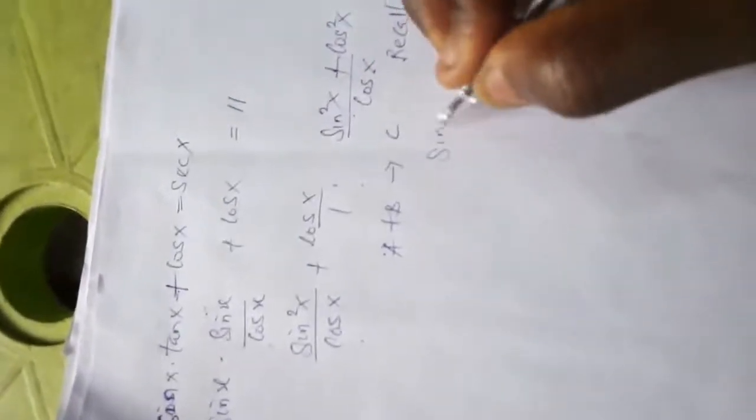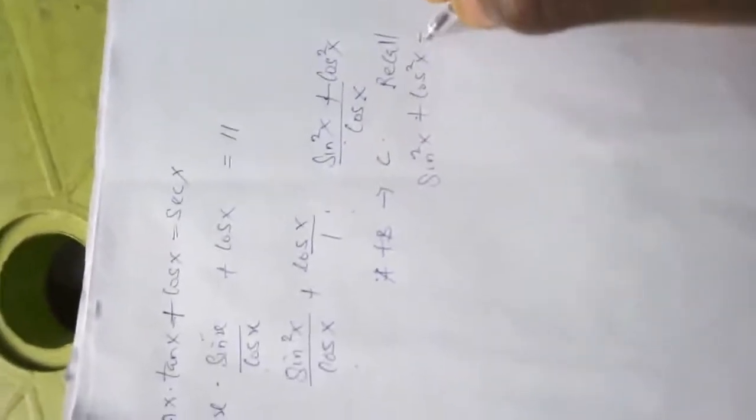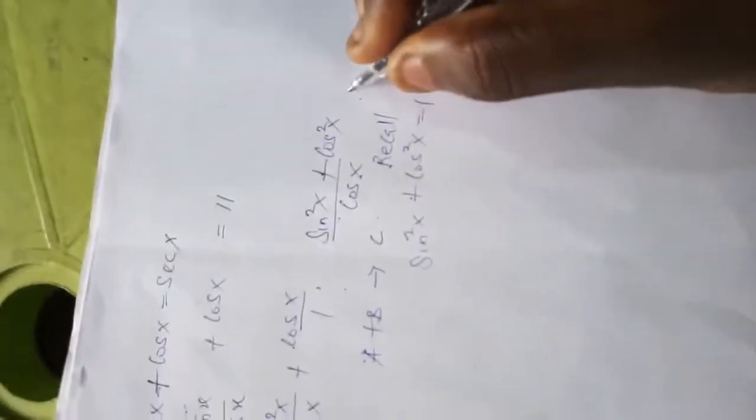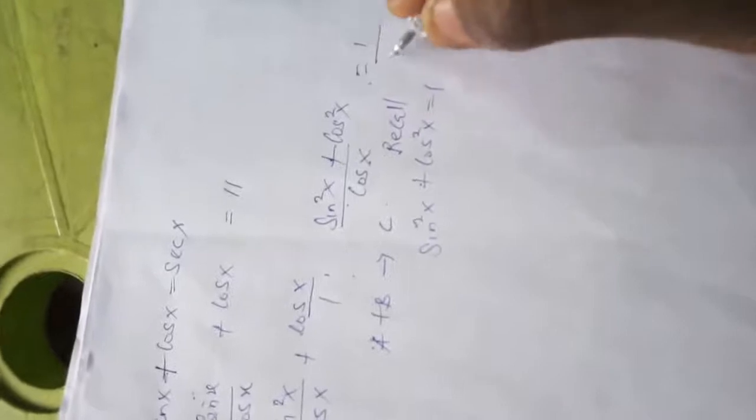Now recall, I'm sure you know already that sine squared x plus cos squared x equals 1. So I can substitute 1 above. So this equals 1 over cos x. And recall again that from my reciprocal identity, 1 over cos x is the same thing as sec x.